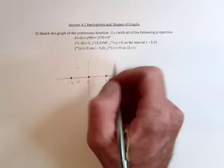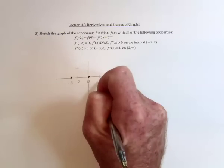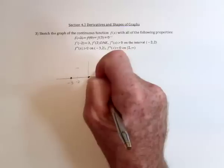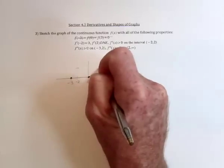The derivative at positive 2 does not exist. So that could be something like a cusp.